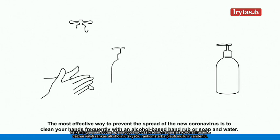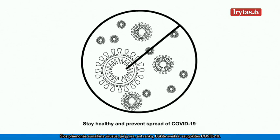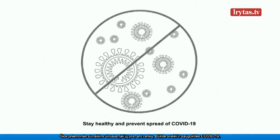The most effective way to prevent the spread of the new coronavirus is to clean your hands frequently with an alcohol-based hand rub or soap and water. This will eliminate the virus if it is on your hands. Stay healthy and prevent the spread of COVID-19.